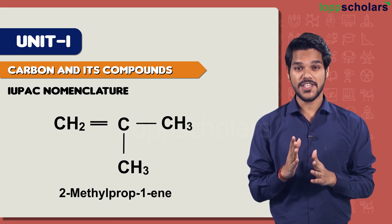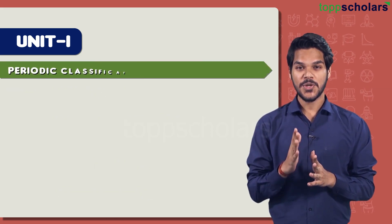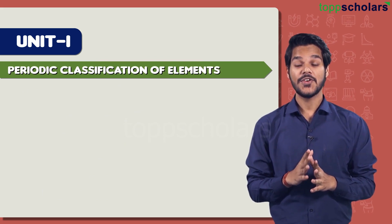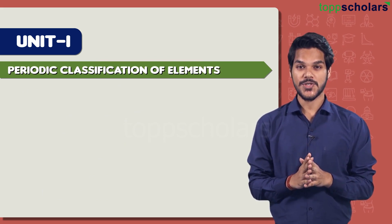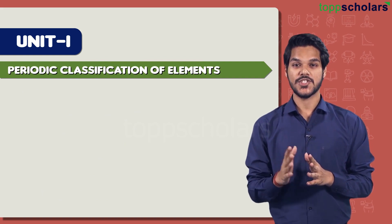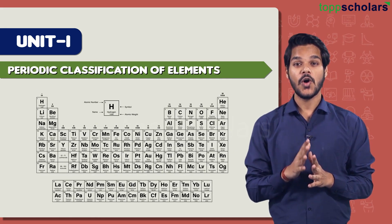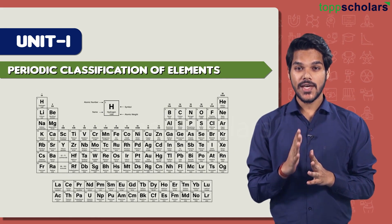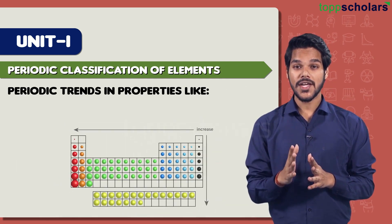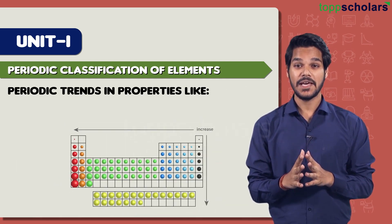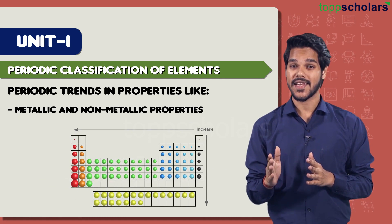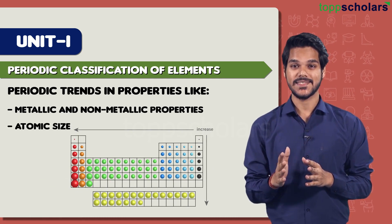After Carbon and Its Compounds, let's move on to Periodic Classification of Elements. From this chapter you can expect questions based on the merits and demerits of Mendeleev's Periodic Table. You can also expect questions based on periodic trends of various properties of elements, such as metallic and non-metallic characters and atomic size.